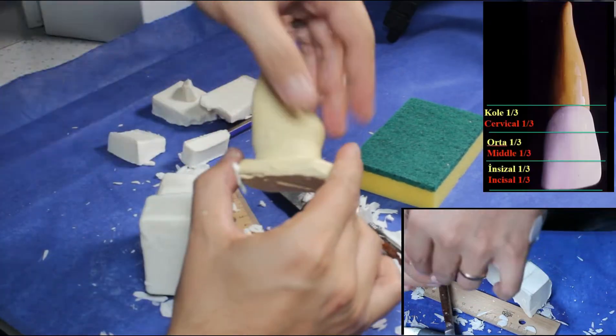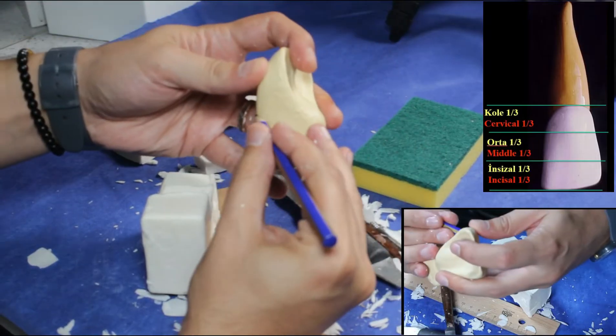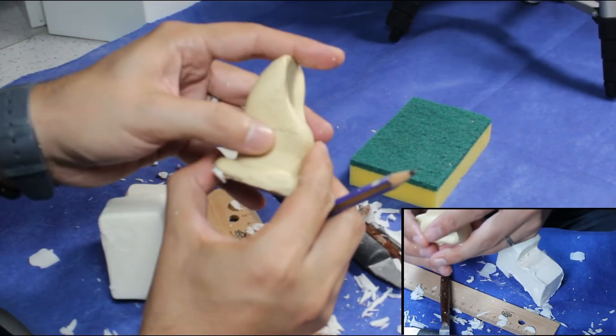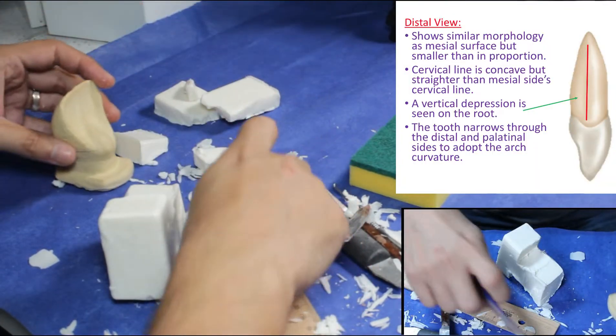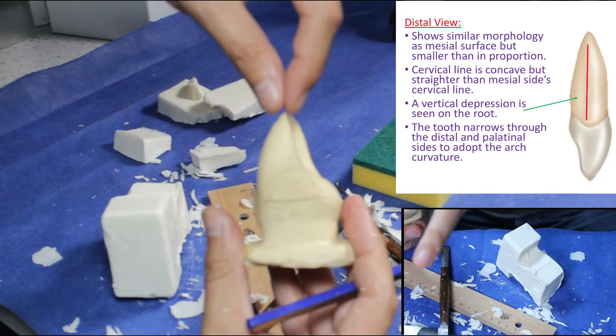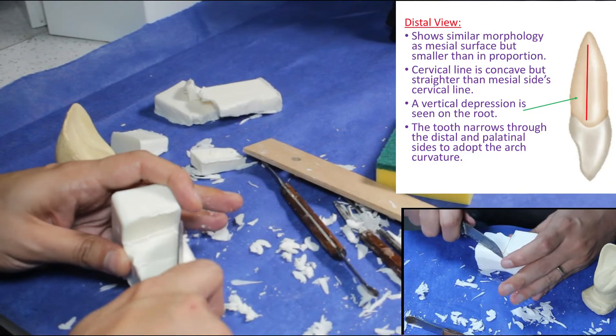We mark the cervical one-third which is the widest part of the tooth. Then we cut the soap above this line until the incisal line. Be careful about leaving adequate thickness in the incisal.